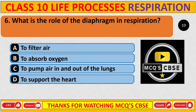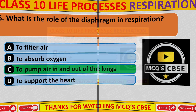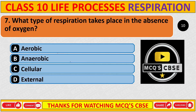Question 6: What is the role of the diaphragm in respiration? Correct answer is C: To pump air in and out of the lungs. Question 7: What type of respiration takes place in the absence of oxygen? Correct answer is B: Anaerobic.